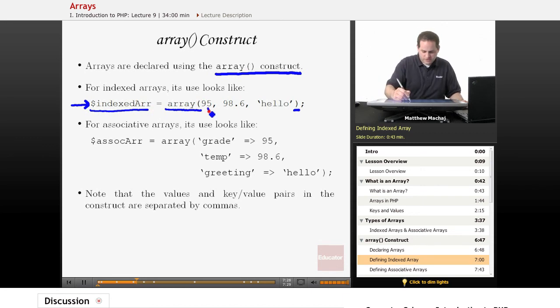Now because this is an indexed array, it uses integers as its keys. So this, because indexed arrays in PHP begin with the index of zero, this is going to be referenced with the key zero. This is going to be referenced with the key one, and this is going to be referenced with the key two.